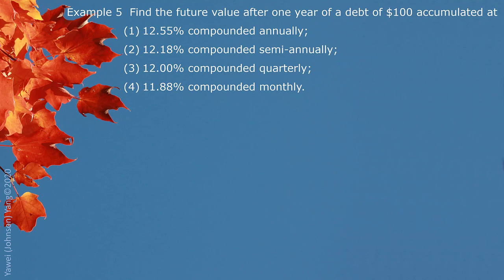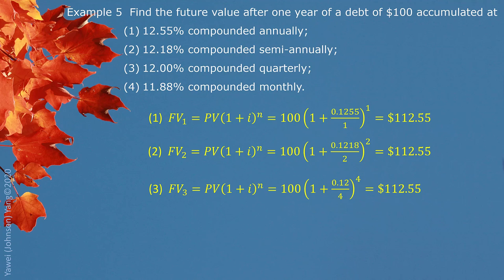Example 5: Find the future value after one year of a debt of $100 accumulated at: 12.55% compounded annually, 12.18% compounded semiannually, 12% compounded quarterly, and 11.88% compounded monthly. We simply calculate the future value for each condition using the future value formula. For all four situations, we come out with the same answer: $112.55.